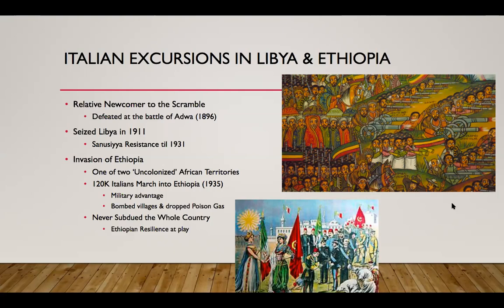Ethiopia at the time was one of two uncolonized African territories. The other one — and I put uncolonized in parenthesis — is Liberia. We've already described in previous videos the dynamics in Liberia, which are technically not colonized, but still represent a solid Western hand in the establishment thereof. This image here is a depiction of the seizure of Libya by the Italians.